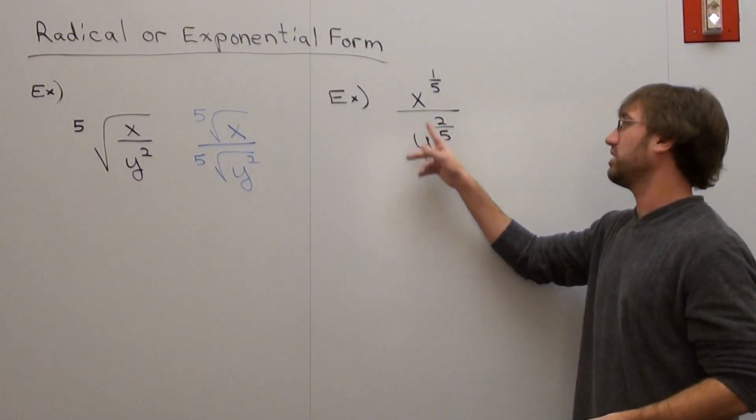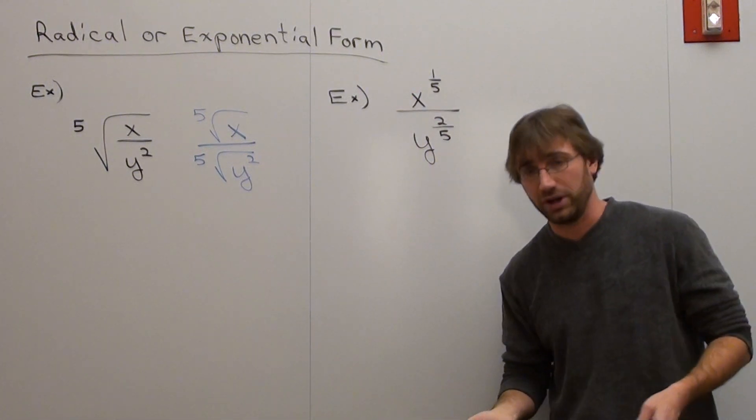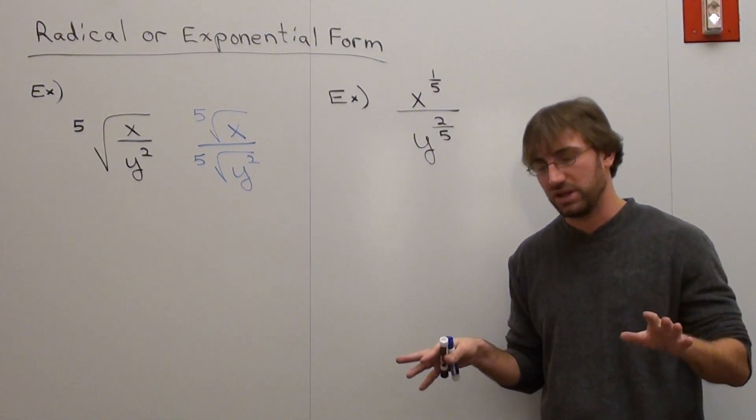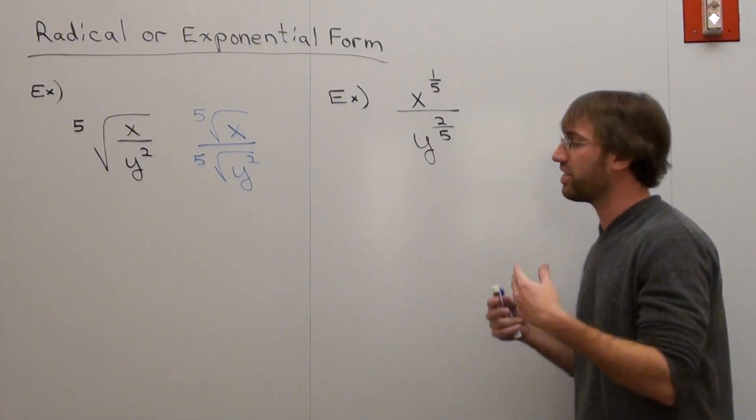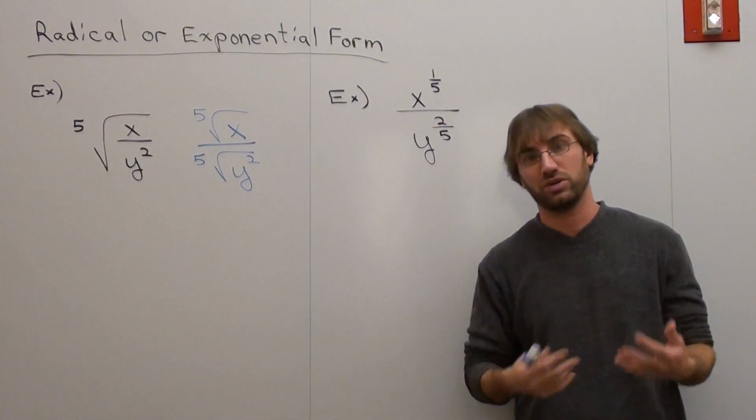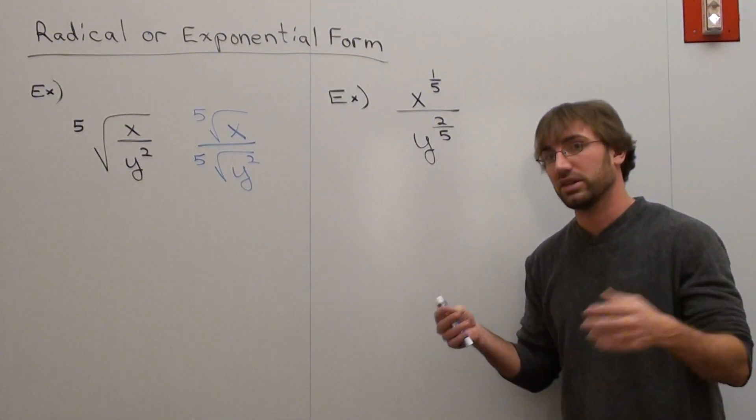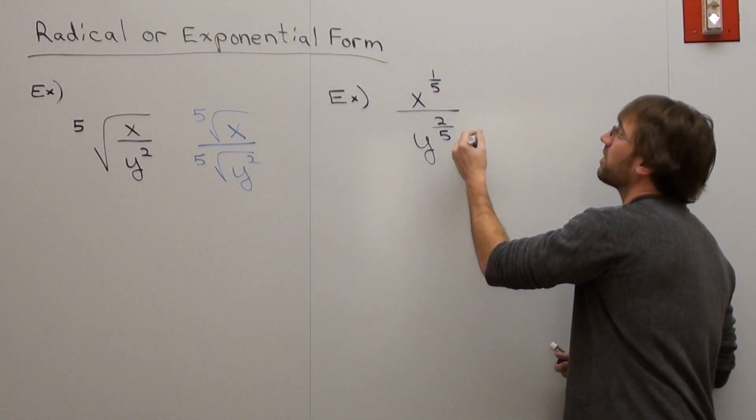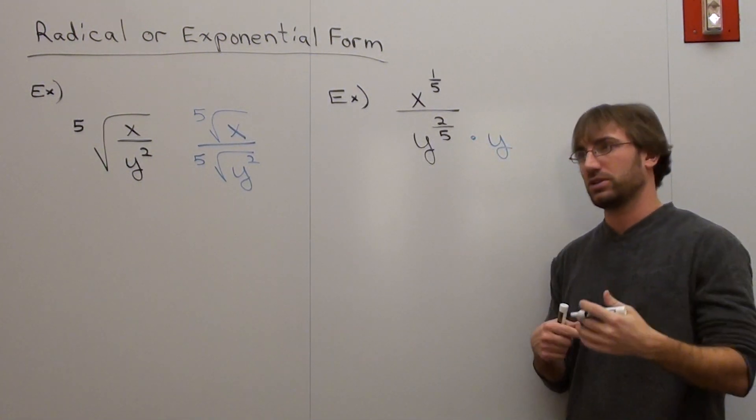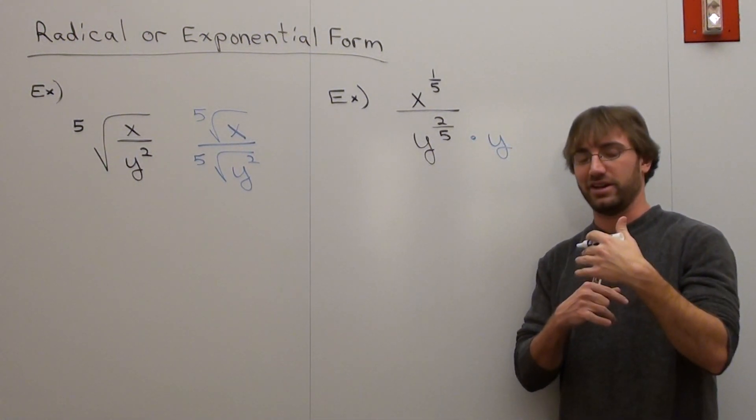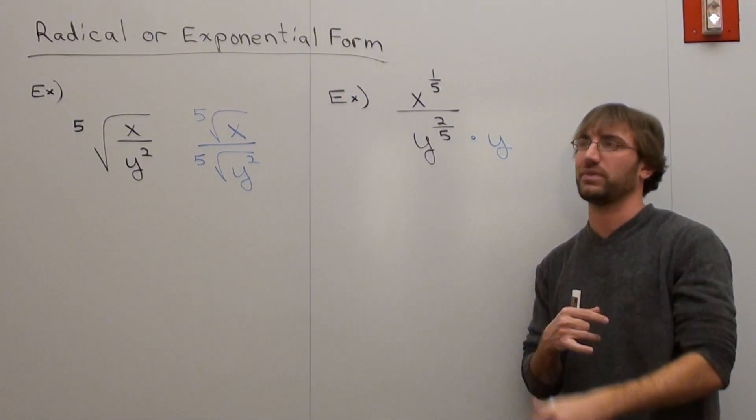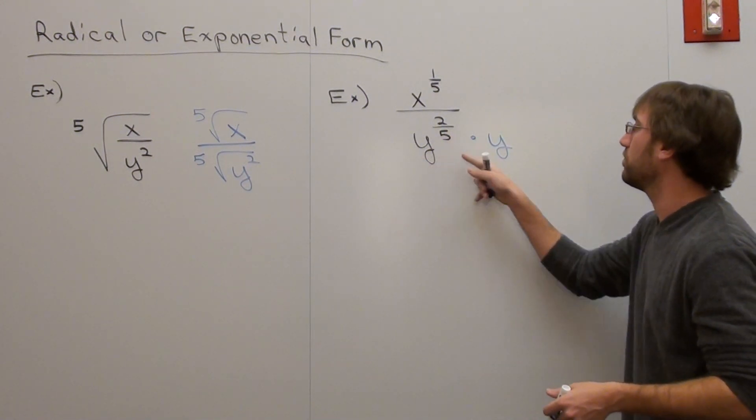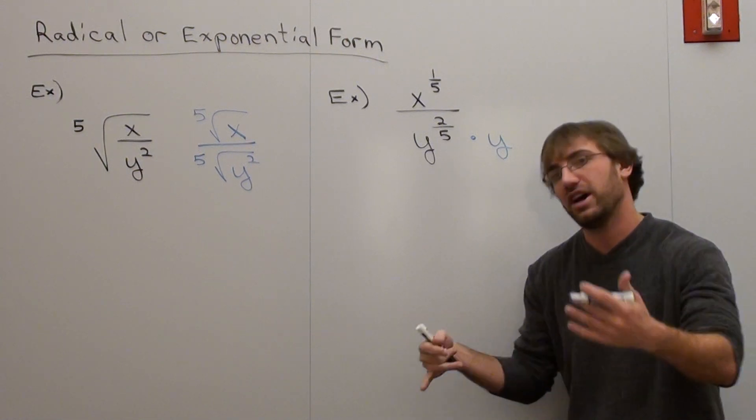Now, here's the thing. I've got y to the two-fifths in the denominator. I've got x to the one-fifth in the numerator. If I want to make y whole, if I want an exponent on that y, but I don't want it to be a fractional exponent, I have to think about what I have to multiply in the denominator and the numerator in order to make that whole. Well, what's really cool about putting this in exponential form is I can do that relatively easily. What do I have to multiply y by in order to have it have an integer value, actually I should say a natural number as an exponent?